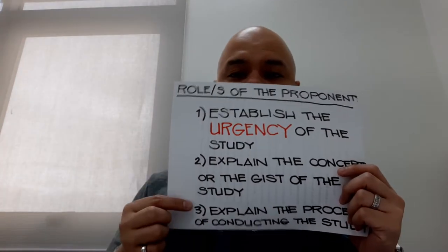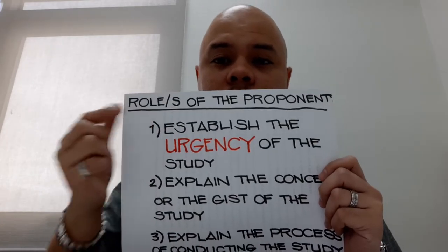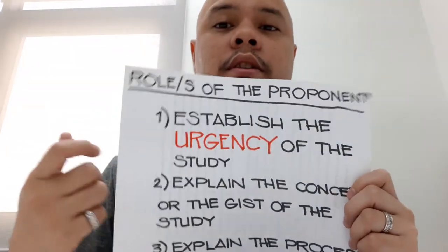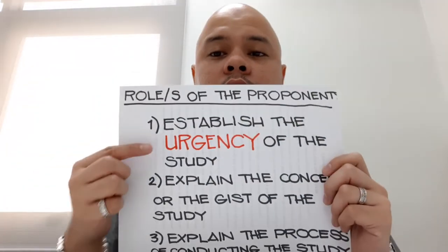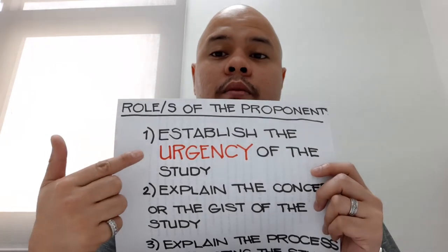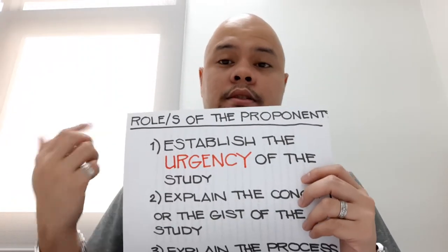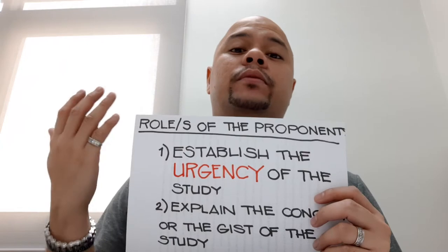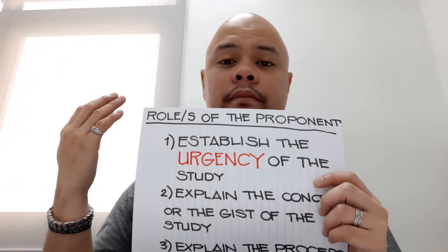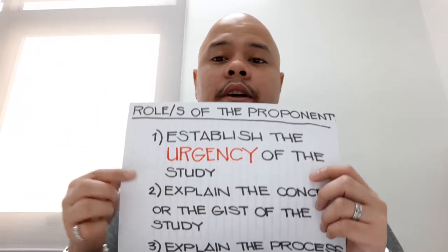On to the next portion — just what are the roles of the proponents or the researchers like yourselves? I have identified three major roles of the proponents. First, as researchers, you are there to establish the urgency of your study. And when I mean urgency, this is the why — why is it important for us to conduct your study? The significance.